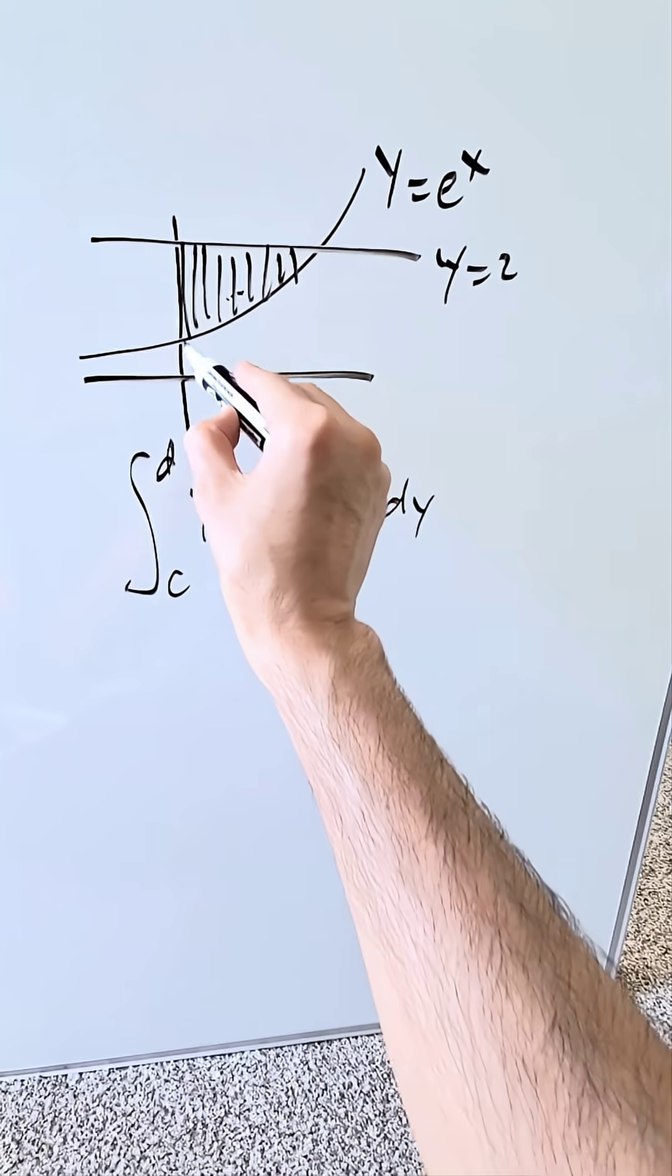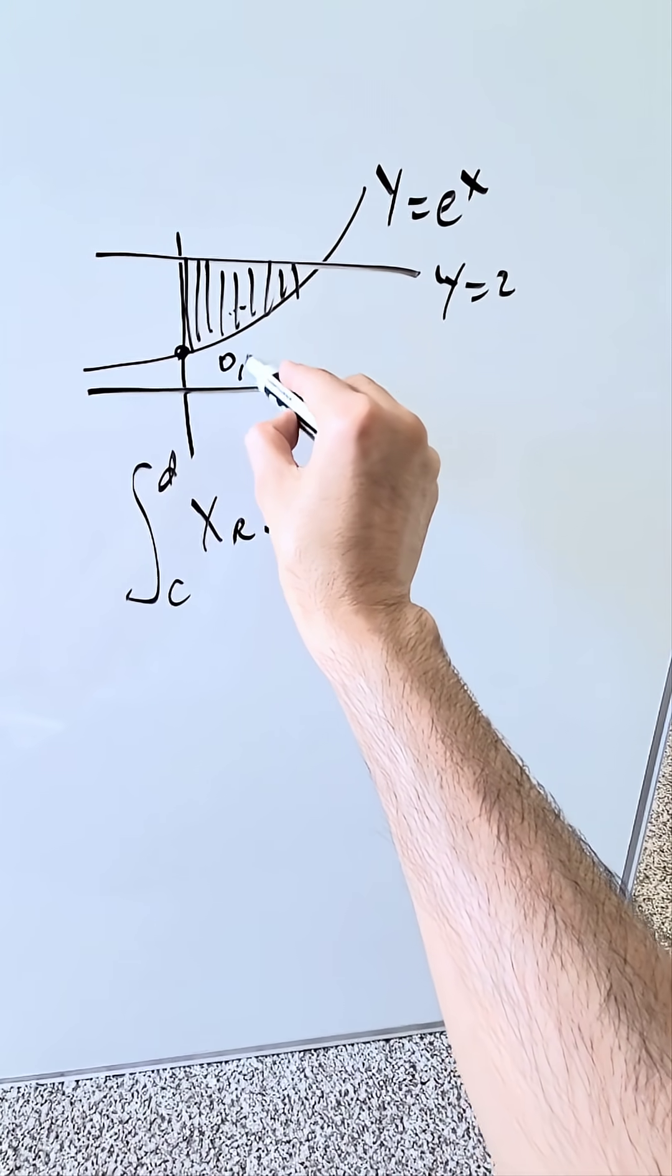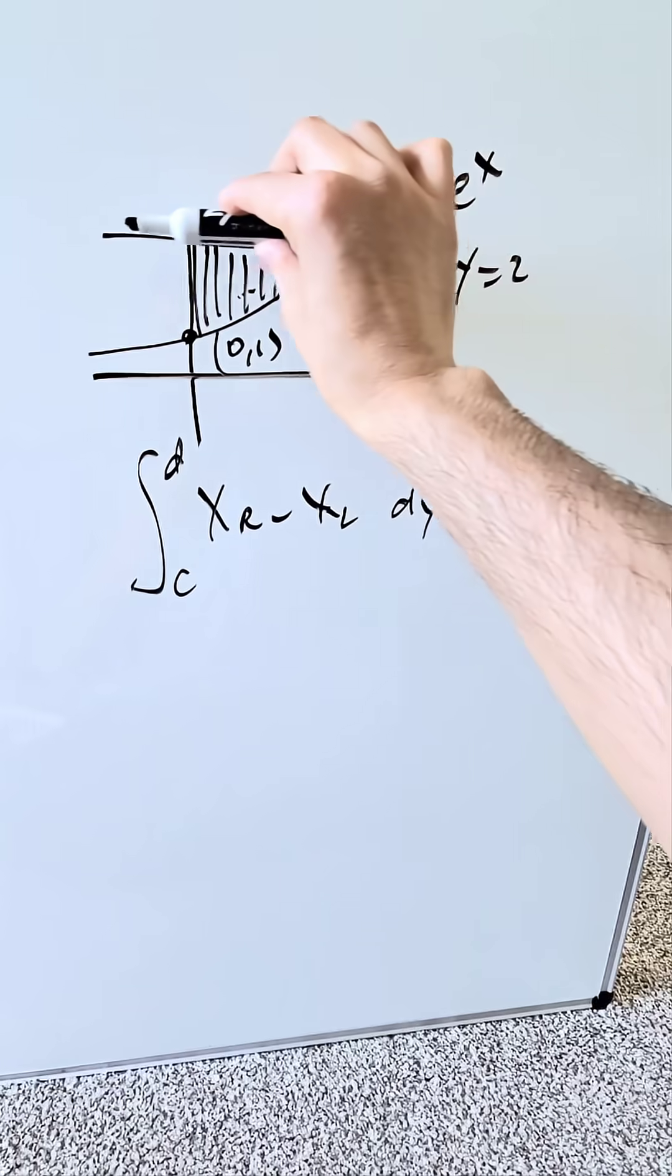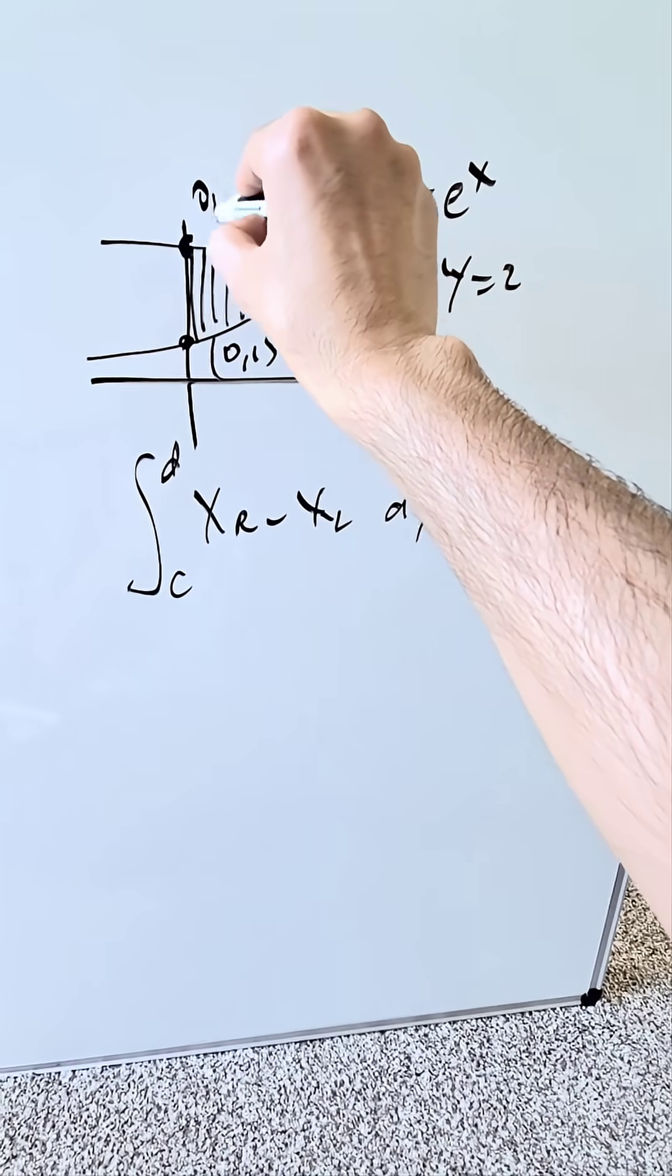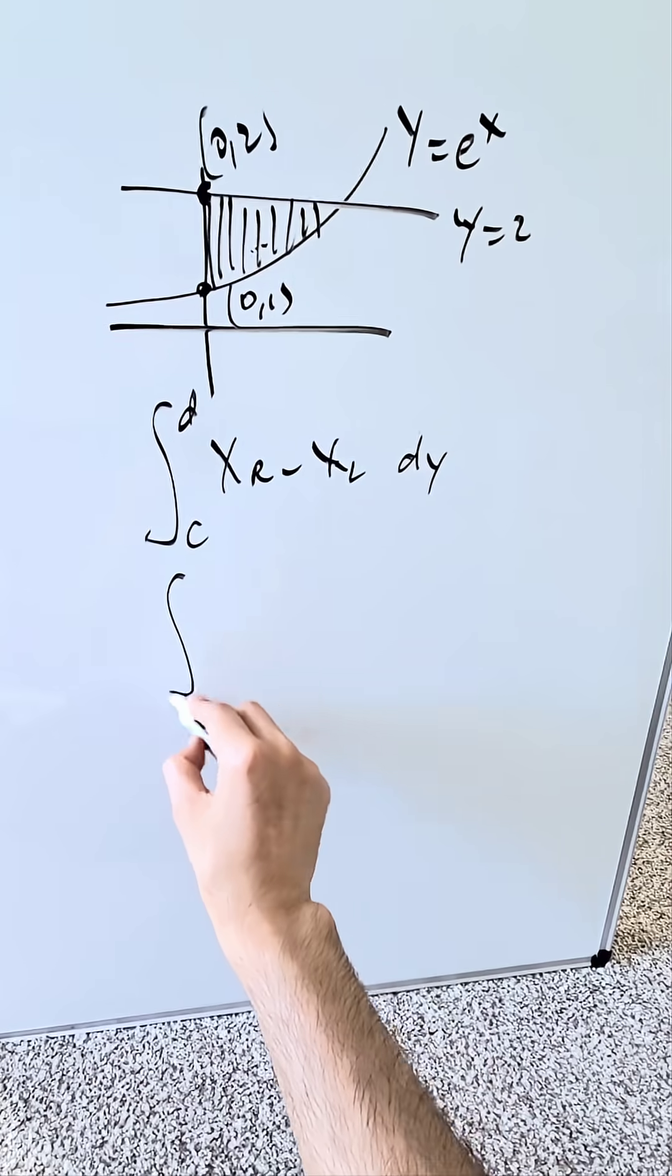What are my limits? Look right here. The exponential intercepts the y-axis at 0 comma 1. I have a y equals 2. This will be 0 comma 2. My limits are easy, it'll be 1 to 2.